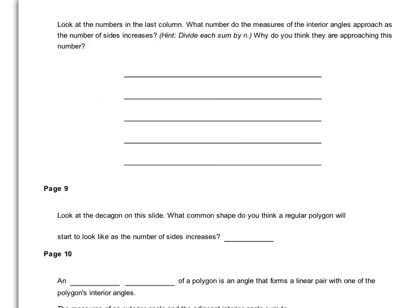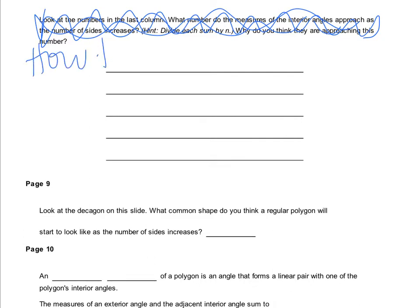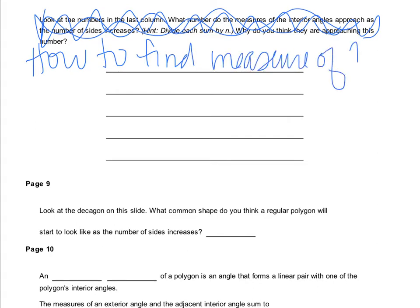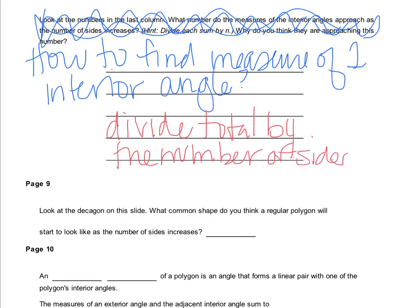Now, I want to ask you: how do you find the measure of one interior angle? I just gave you the formula to find the measure of all the interior angles — the sum of them. So if you want to find the measure of just one of them, all you have to do is divide the total by the number of sides.